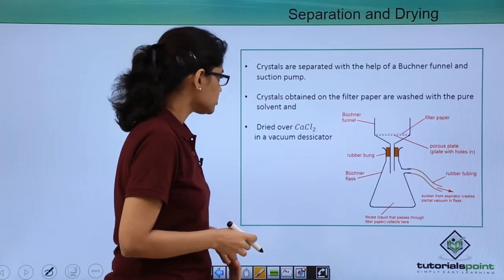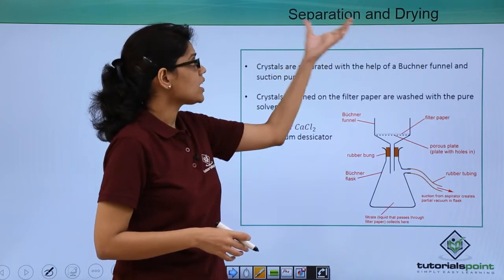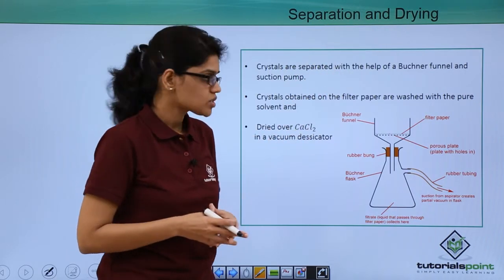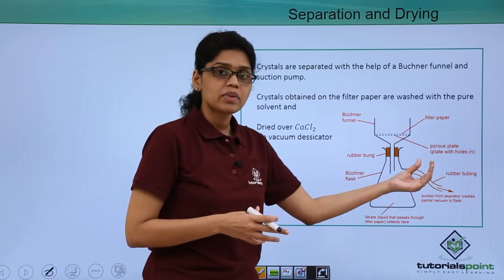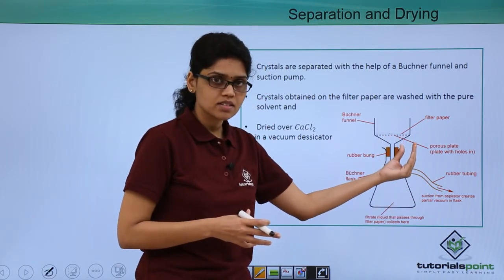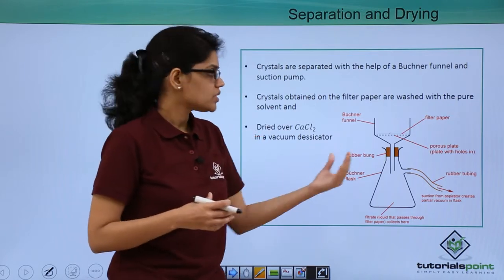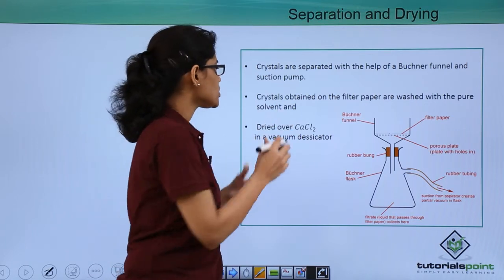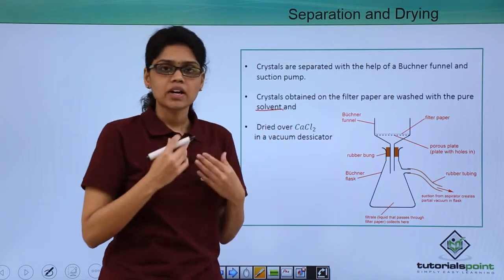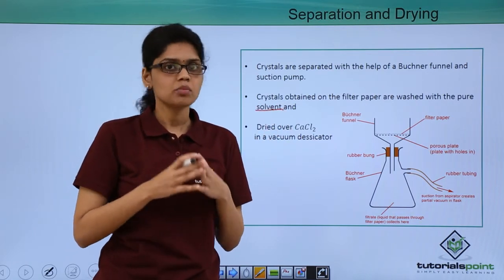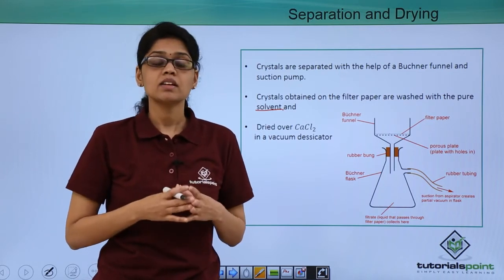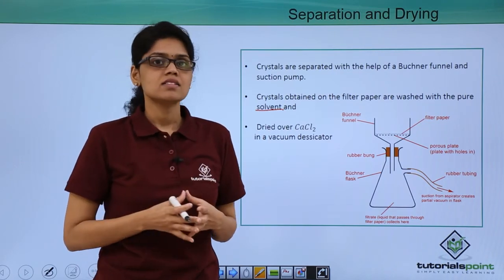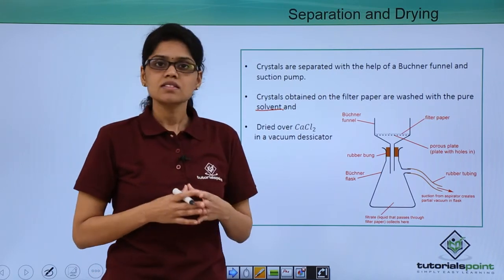The last step is separation and drying. Crystals are separated with the help of a Buchner funnel and suction pump. By creating vacuum, we filter the crystals. The crystals separated on the filter paper are removed, washed with the solvent, and then dried over calcium chloride in a vacuum desiccator. Calcium chloride is hygroscopic in nature—it absorbs moisture quickly and enhances the drying of the crystals immediately.